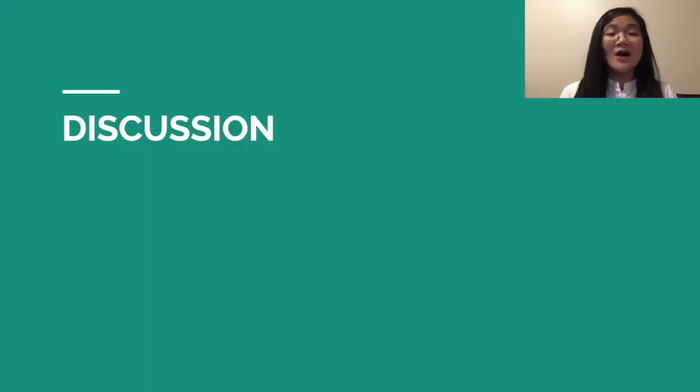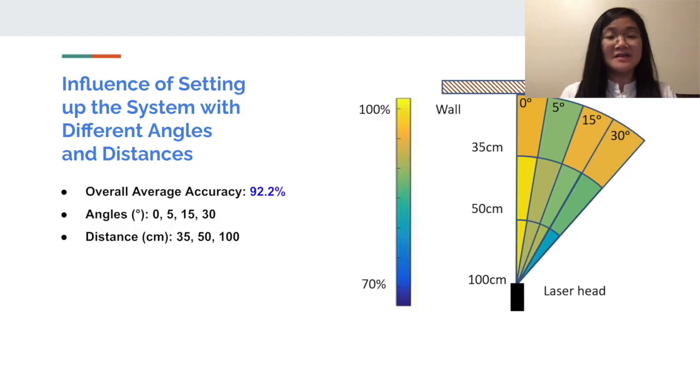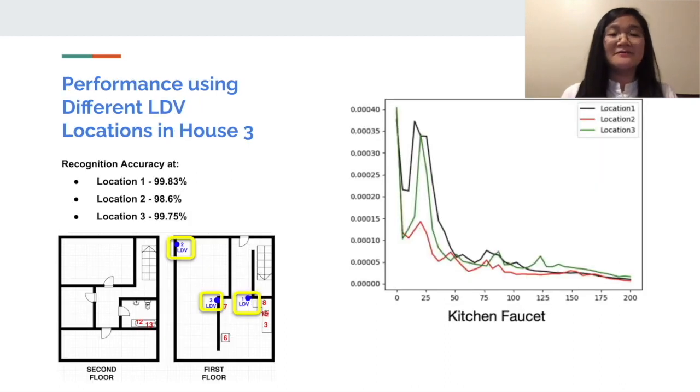To explore how the changes in angles and distance will affect the performance of the LDV, we conducted an experiment to test the LDV's performance at four different angles and three distances from the wall in house 3. The overall average accuracy was 92.2%. Next, to examine the influence of LDV locations on performance, we selected three laser projector points in different locations as shown on the left figure.